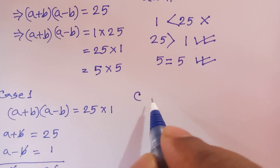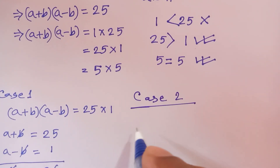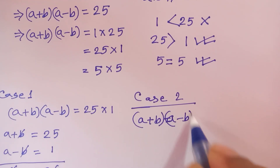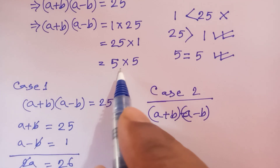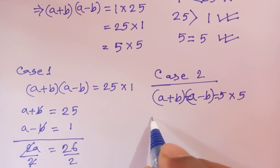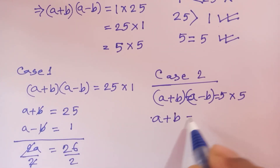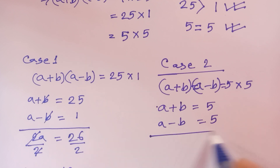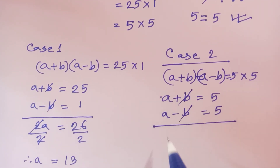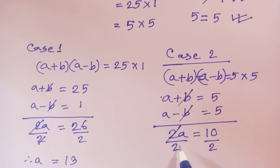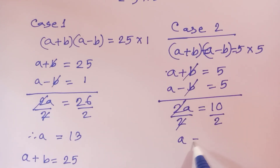Case 2: (a plus b) times (a minus b) equals 5 times 5. We have two equations: a plus b equals 5 and a minus b equals 5. Adding both equations, the B terms cancel, giving 2a equals 10. Dividing both sides by 2, we get a equals 5.